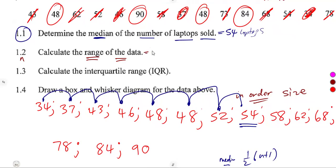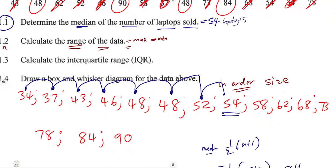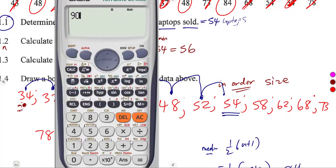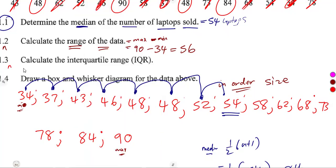Question 1.2: calculate the range of the data. Remember, range equals maximum value minus minimum value. From the arranged data, the maximum is 90 and the minimum is 34. So the range is 90 minus 34, which equals 56.